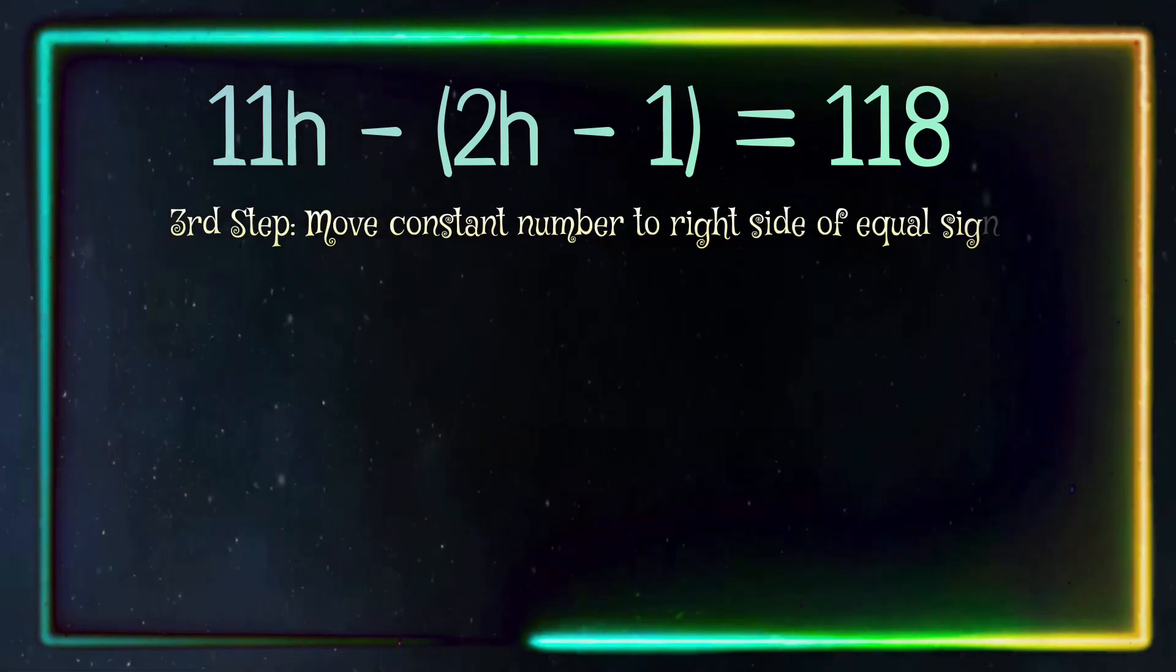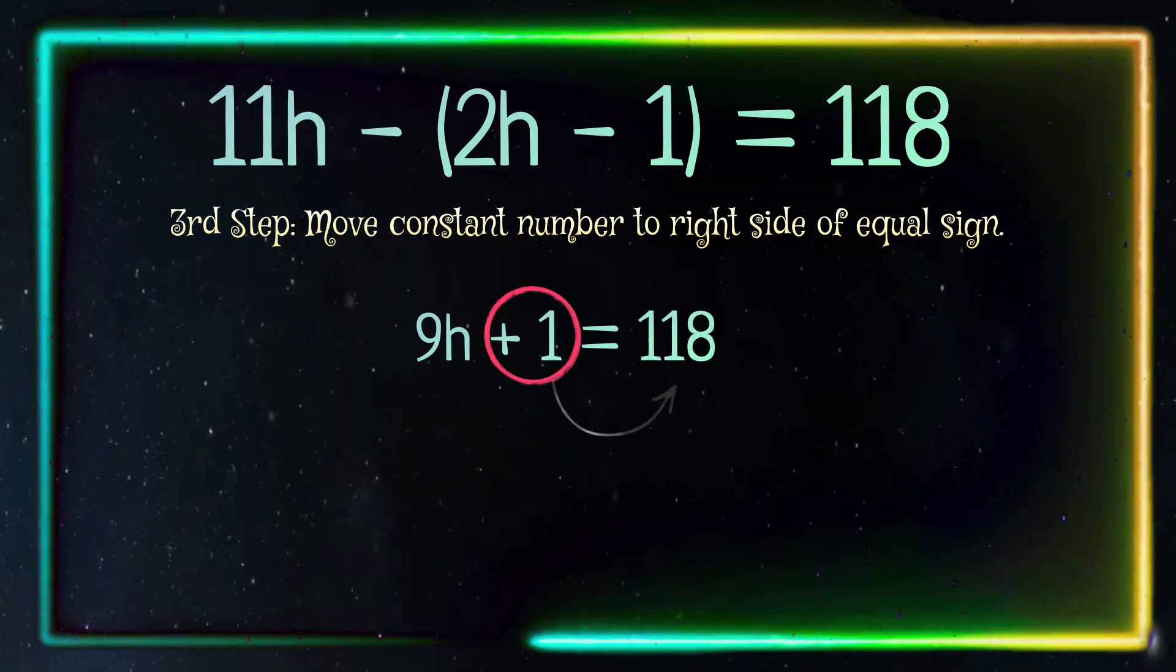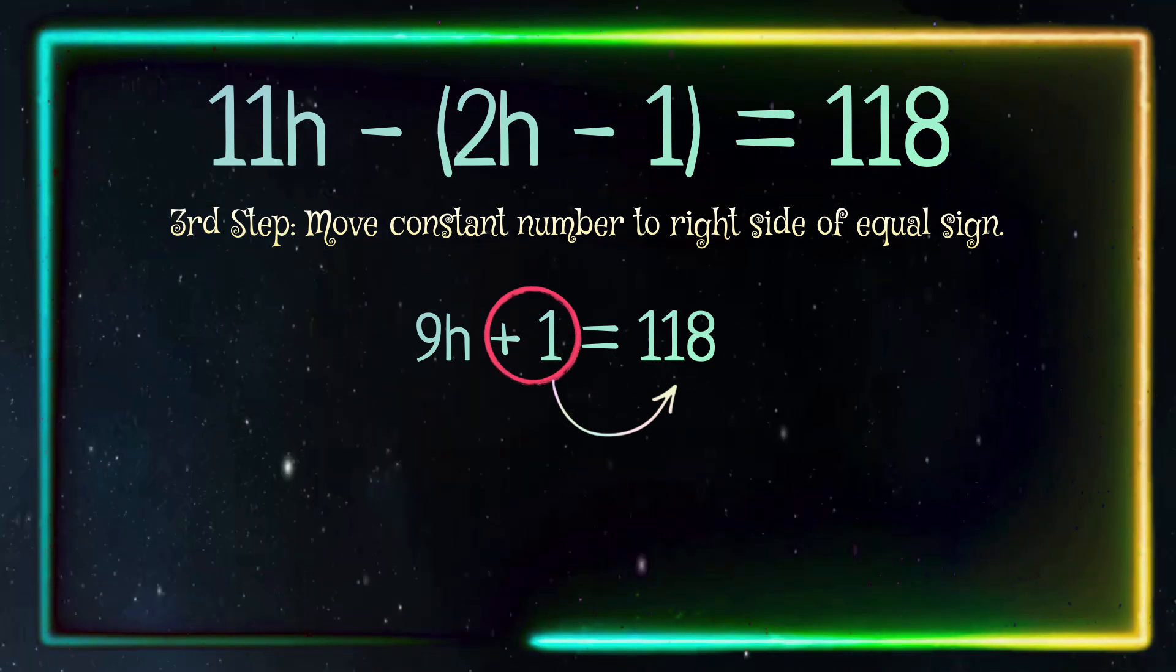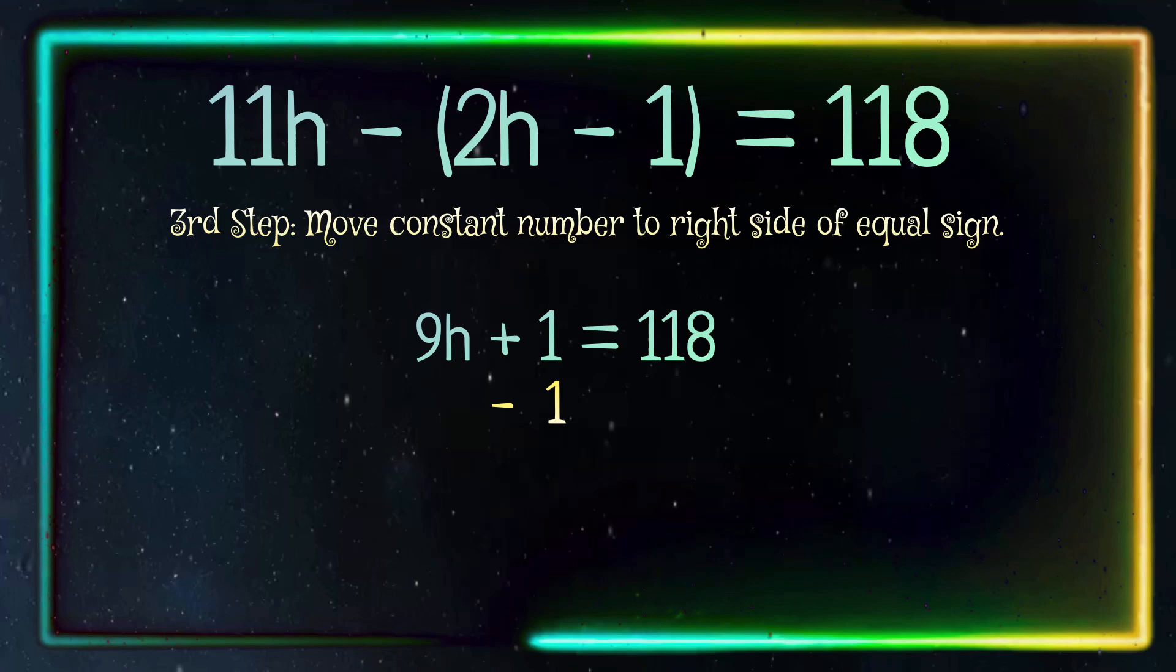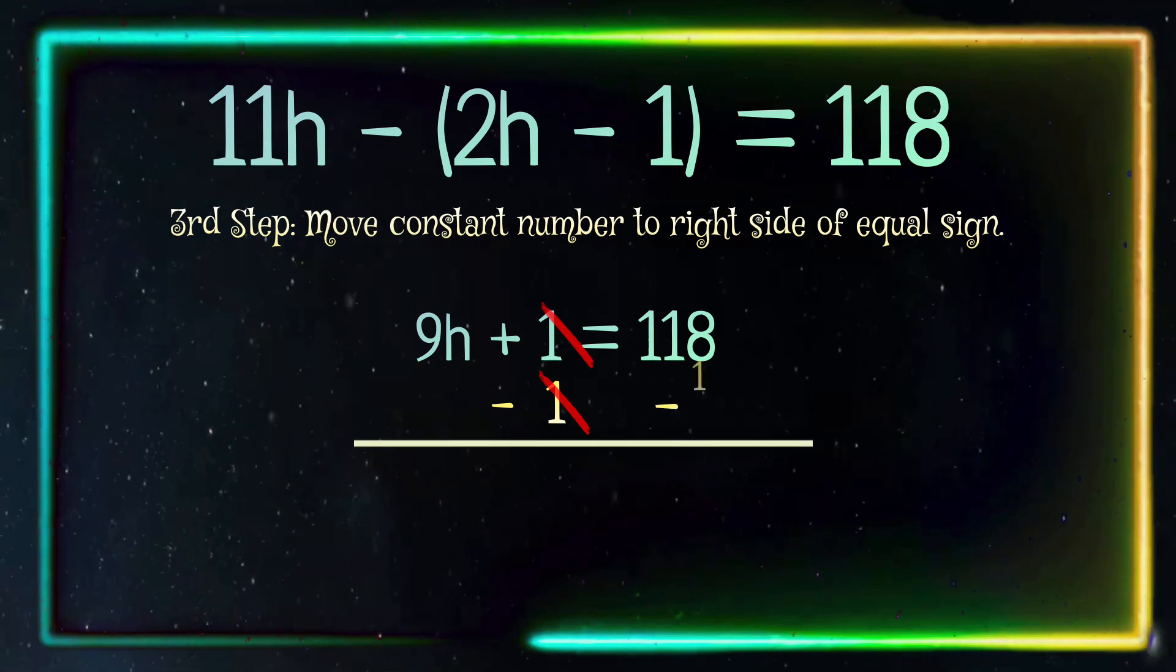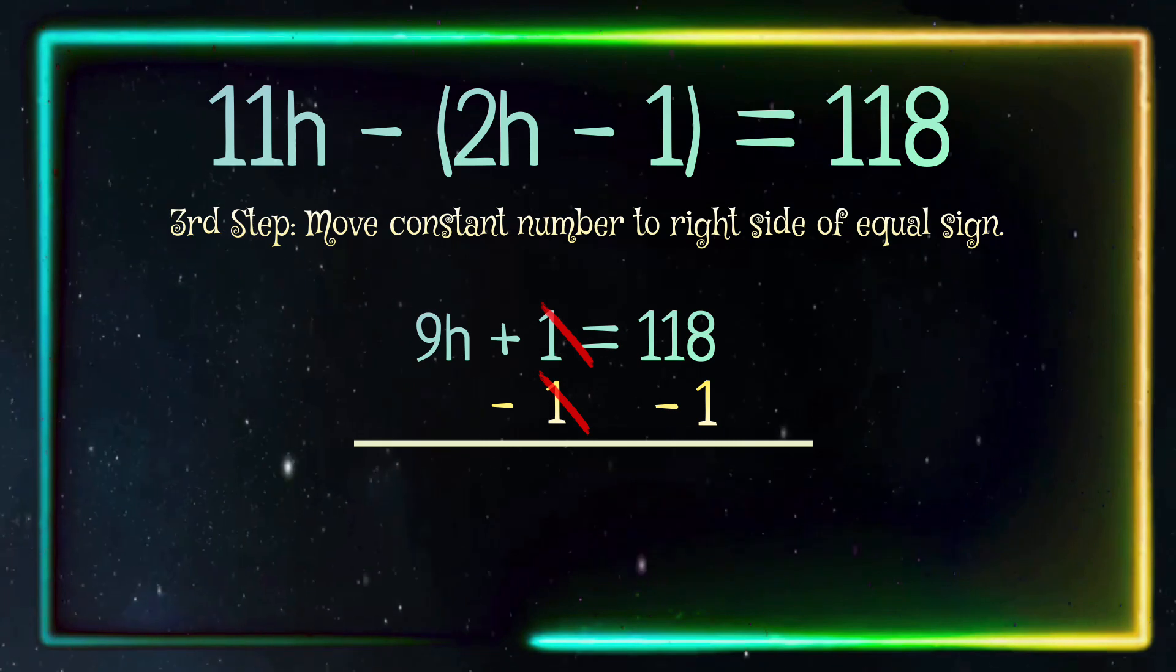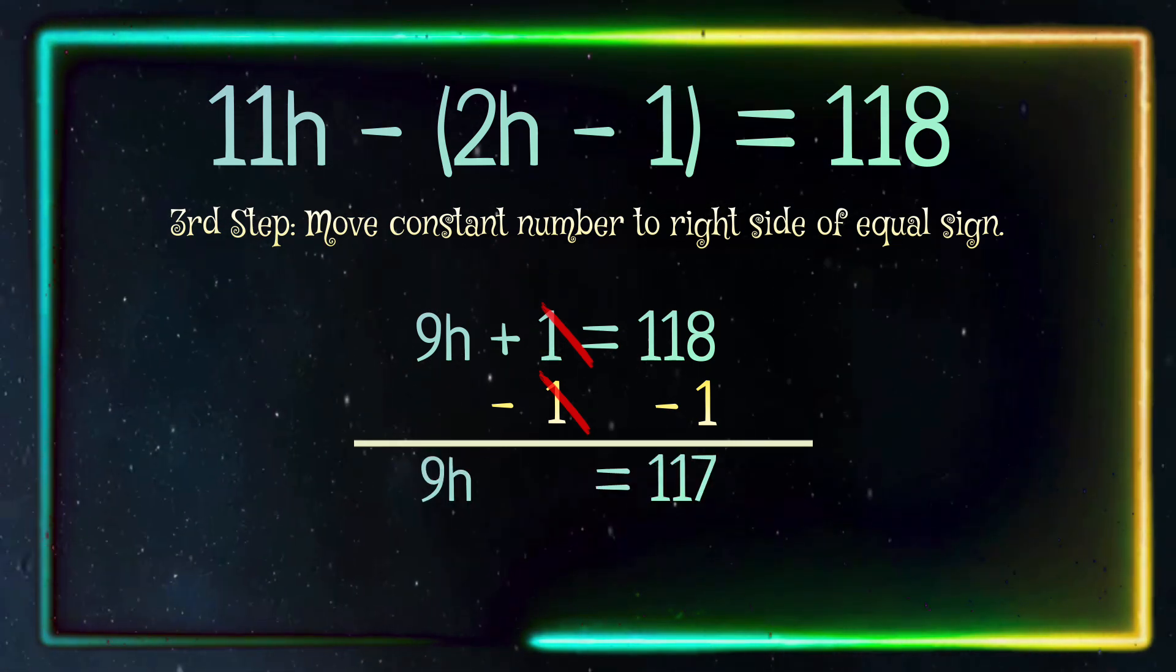Now our third step: move our constant number, which is positive 1, to the right side of the equation. In order to do that, we are going to cancel out the positive 1 by subtracting 1, giving us 0 to cancel it out. What we do to one side we have to do to the other side, so we subtract 1 from the right side. 118 minus 1 equals 117.